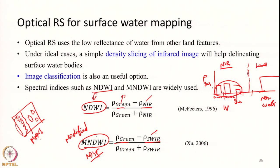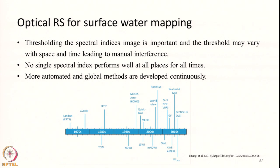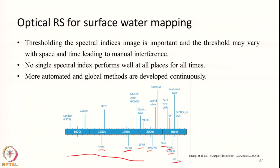Many studies have used these simple indices successfully for identifying water bodies. However, a major difficulty is identifying the right threshold. Errors in the threshold can lead to miscalculating surface water extent. This is a manual process, and to overcome it, researchers have developed improved or new indices from reflectance values. A slide shows different indices and the years they were developed, along with the satellites from which these indices can be obtained.